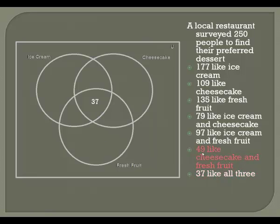The next one: 49 liked cheesecake and fresh fruit. That 49 is represented by this football shape here. Because they like cheesecake and fresh fruit, but they don't say anything about ice cream, this includes people who also liked ice cream. So I need to subtract away the 37 who liked all three to get the number who liked cheesecake and fresh fruit but not ice cream — this rocket-shaped area here. So that would be 12.